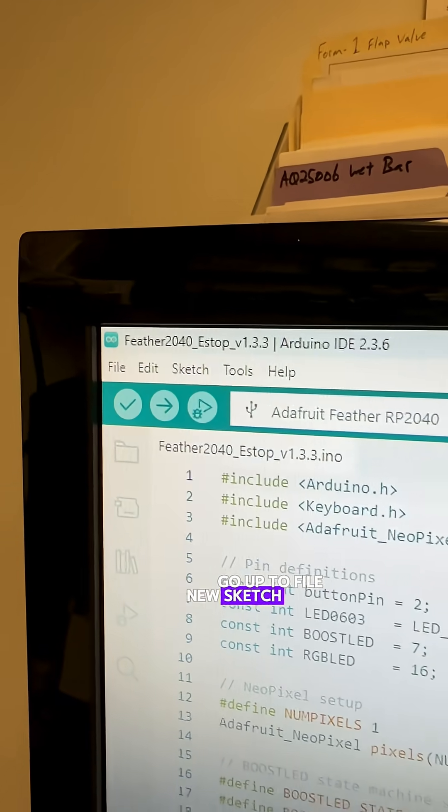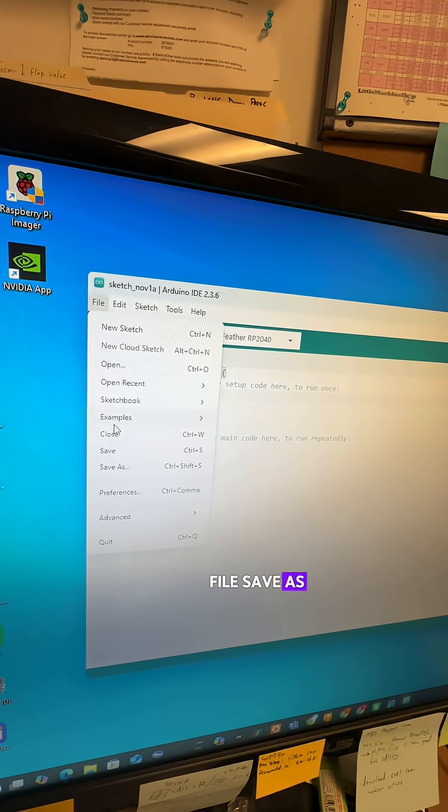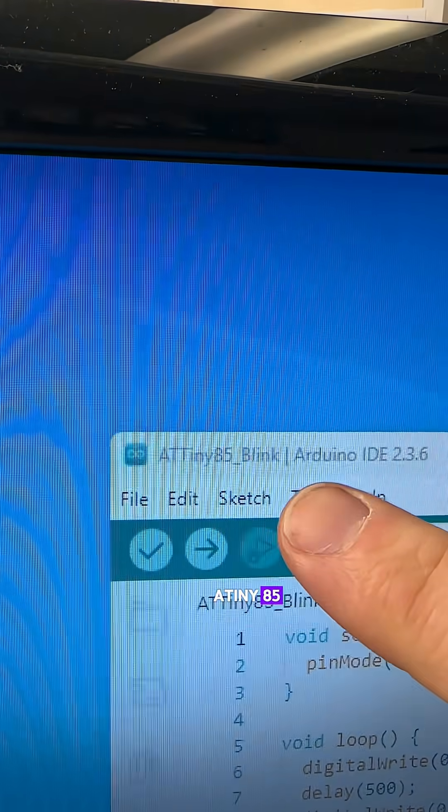Just open up the Arduino IDE, go up to File, New Sketch. Arduino creates a new blank sketch for you. I like to save this as something. File, save as. I'm just going to call this the ATtiny85 blink.